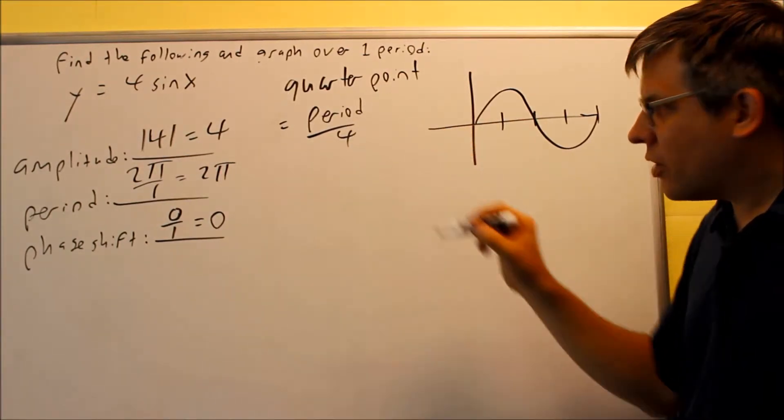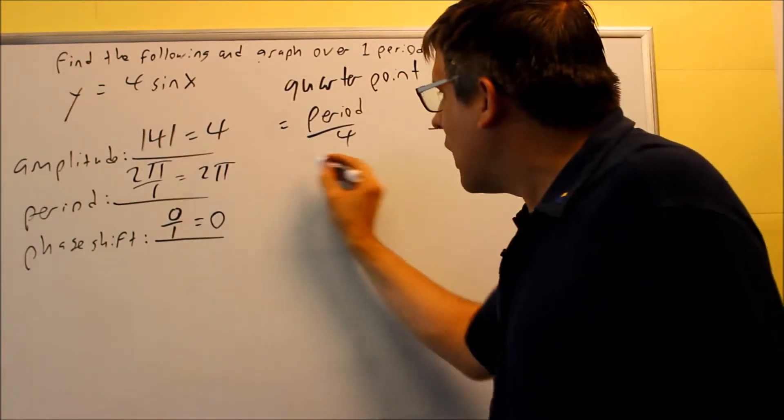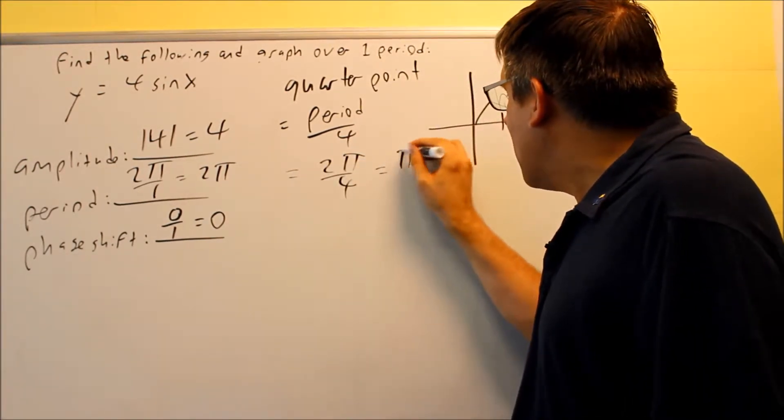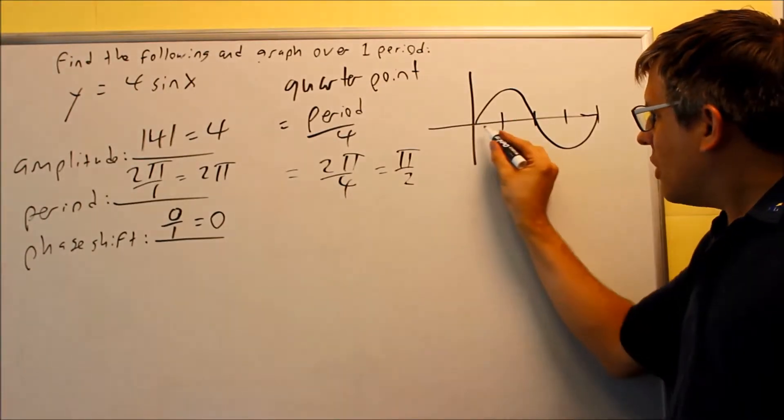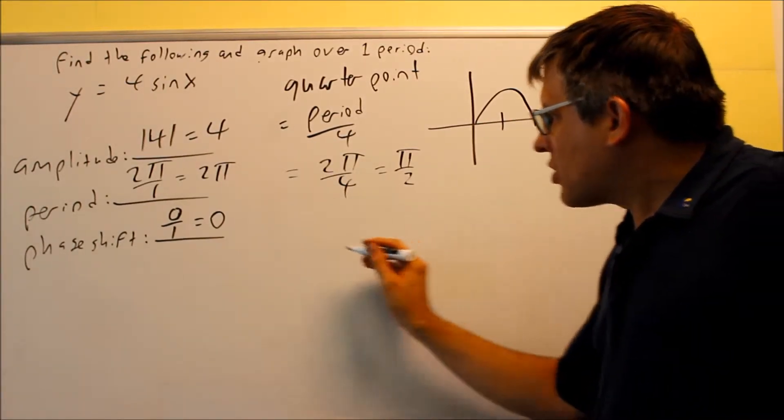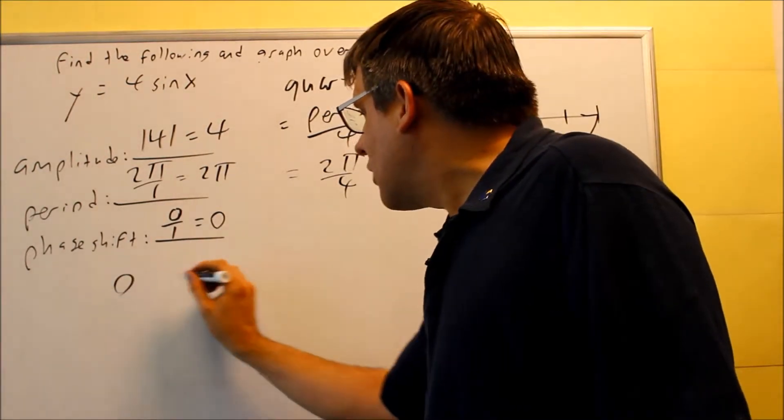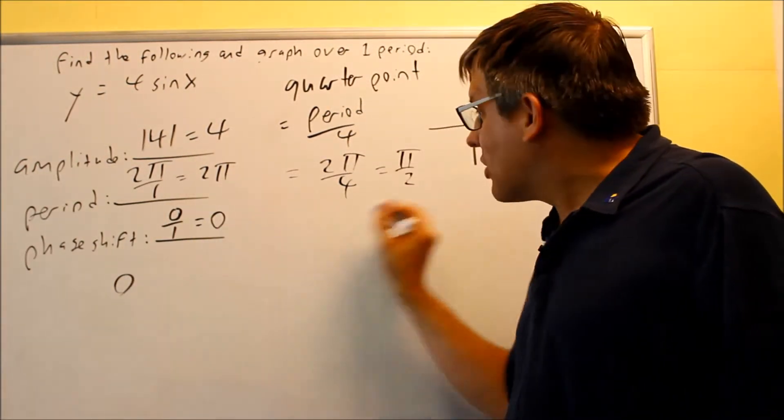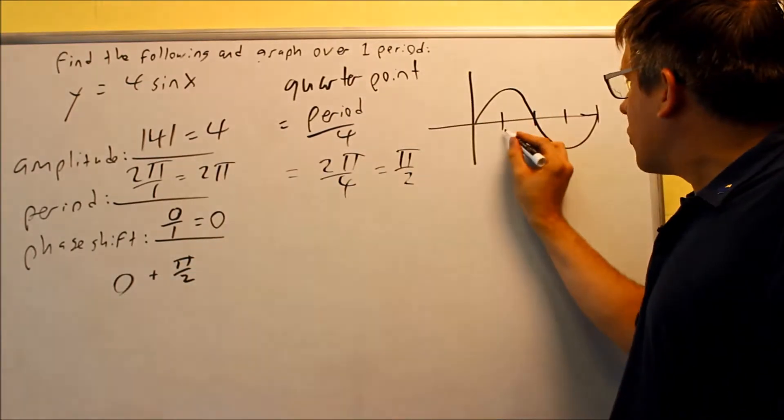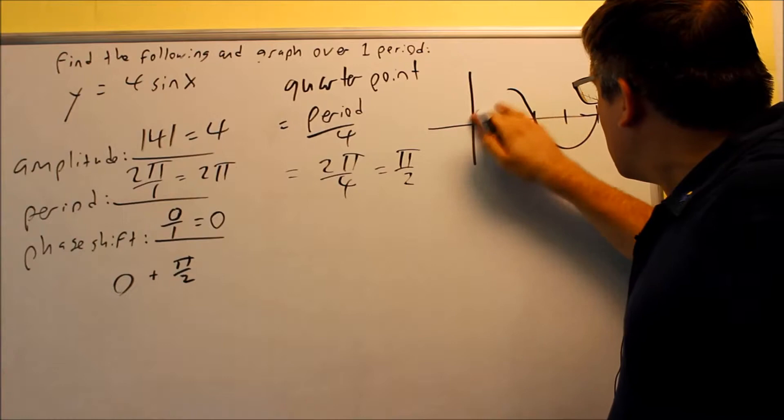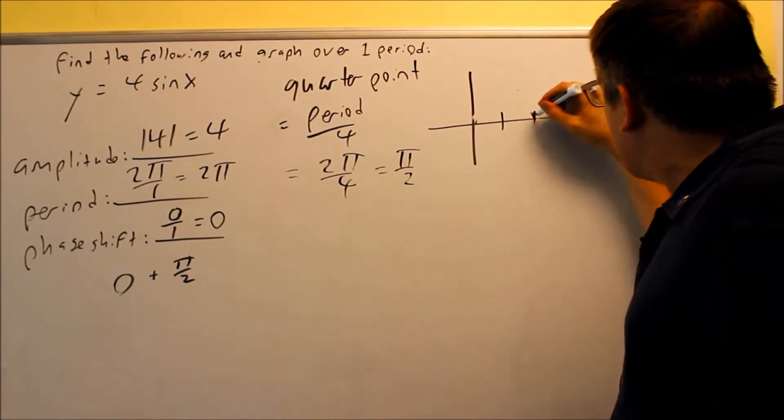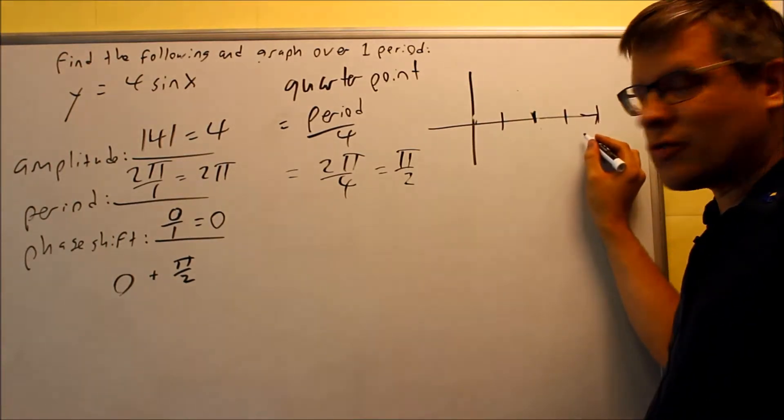So, what I need to do on this one is do period divided by four. My period for this problem was two pi. I'm dividing it by four, and I get pi over two. To get these points right here for my graph, what I need to do is I'm starting with the phase shift. My phase shift is zero in this case. I'm going to add the quarter point to it. When I do that, it brings me over to the next point right here. So, I'm just going to go ahead and do just the key points only. We'll do the graph a little bit later here. I want to just label my key points first.